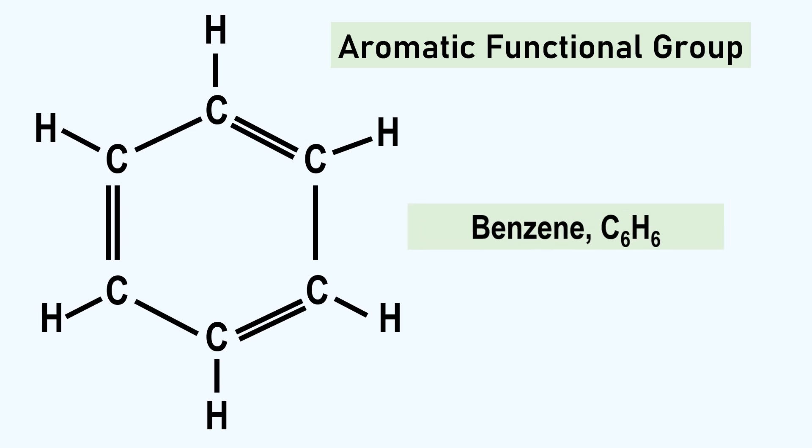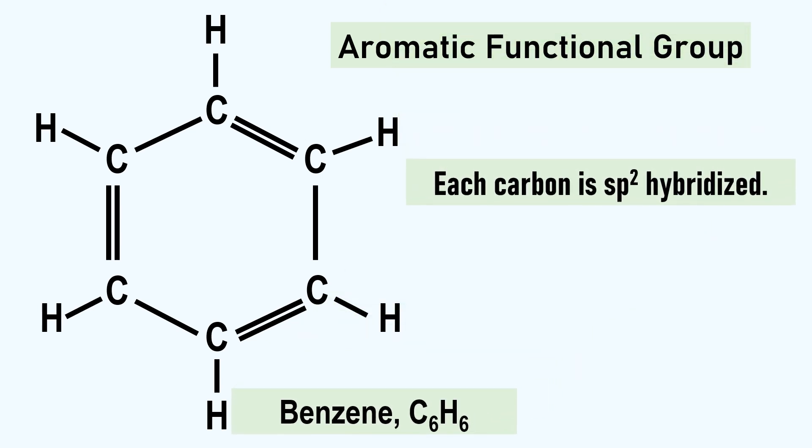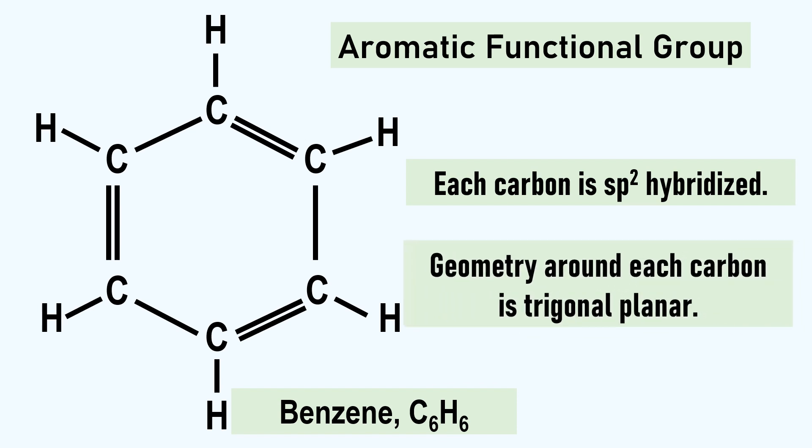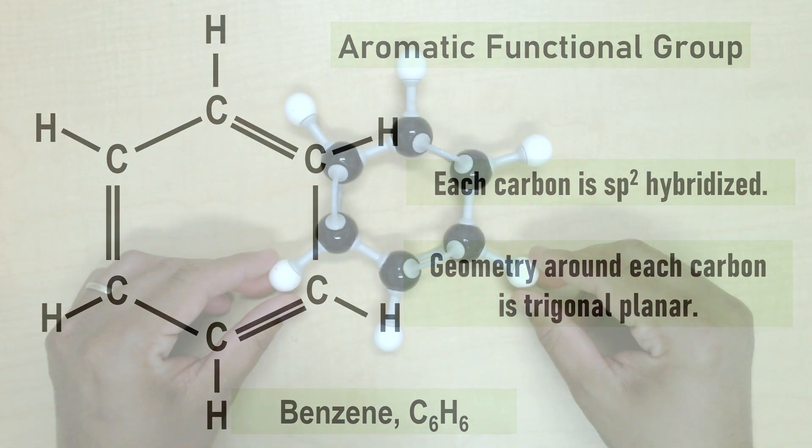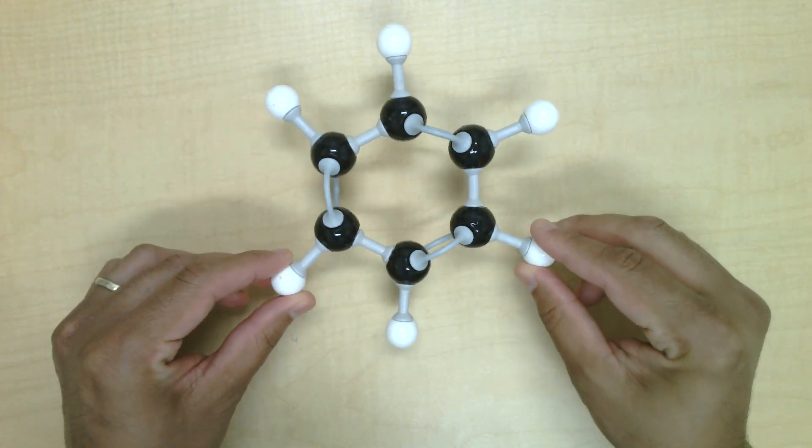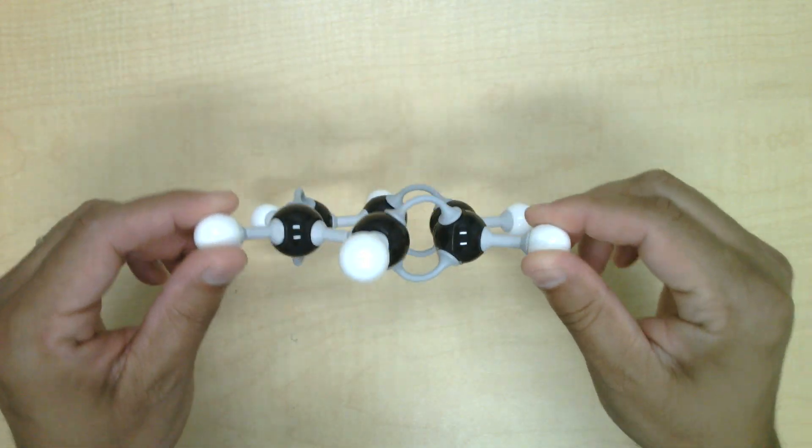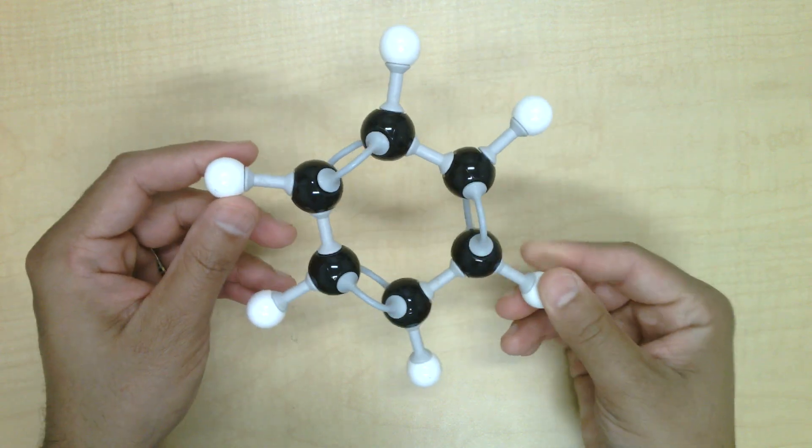This is the ring of sp2-hybridized carbons, so the geometry around each carbon atom is trigonal planar. Here is the ball-and-stick model. You can think of the ring as flat, on a plane.